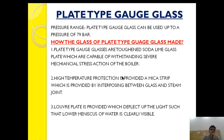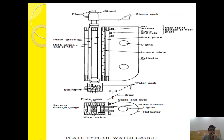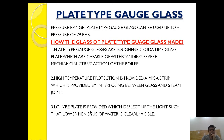High temperature protection is provided by a mica strip which is interposed between the glass and the steam joint. As the pressure rises, the temperature also rises. To withstand the high temperature, a mica strip is interposed between the glass plates so as to prevent damage and give the capability to withstand high temperature. For that reason, the mica strip is used along with the glass plate to provide high temperature bonding.